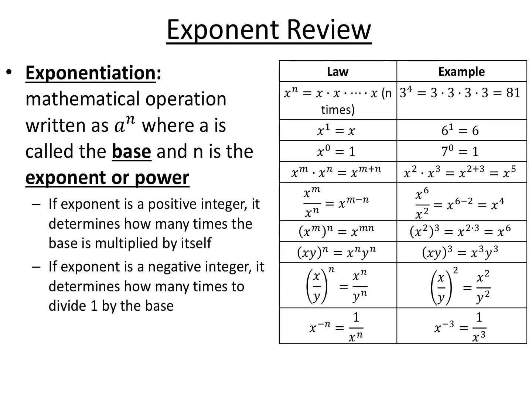This is a little bit of a review of exponents and exponent laws. Exponentiation is the mathematical operation written as a to the n, where a is the base and n is your exponent or power. If you have a positive integer power, it means that's how many times you're multiplying the base by itself. And if you have a negative integer power, that means that's how many times you're dividing 1 by whatever that base is.